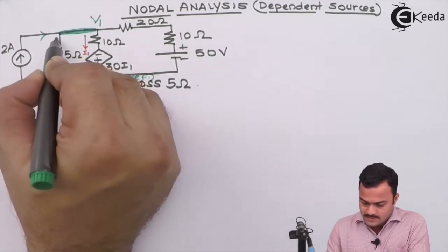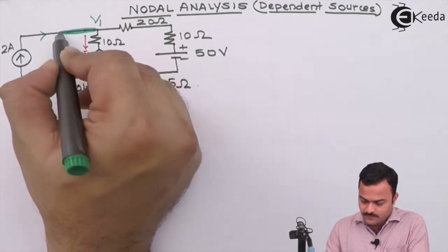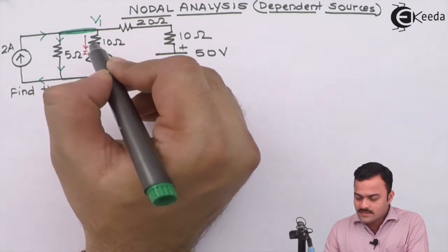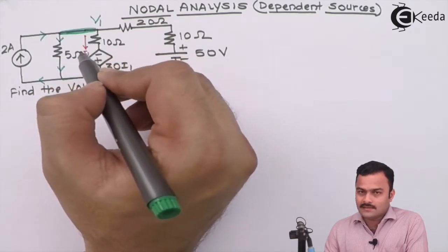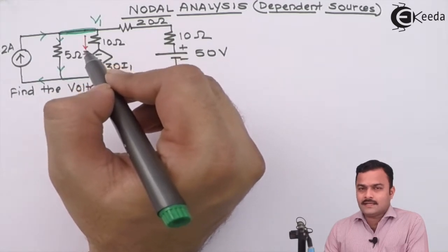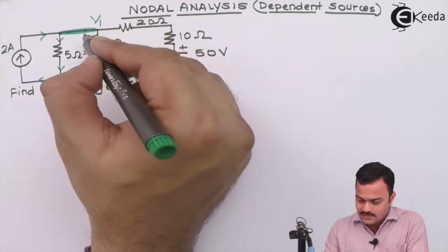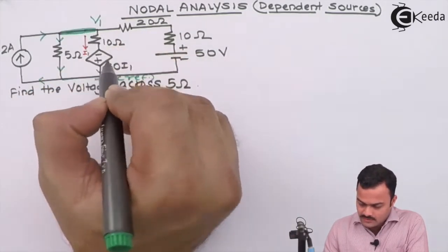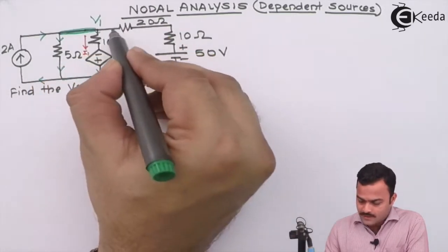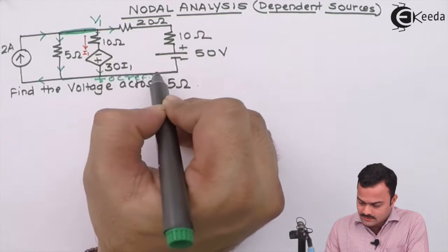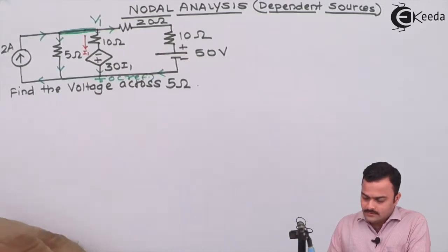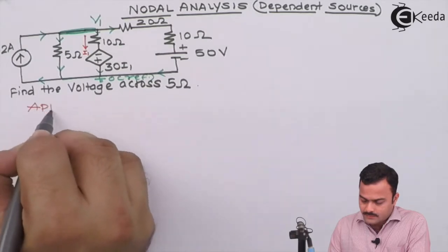This is a current source, so we will maintain the current direction as it is from reference to V1. One thing we will be keeping the same is whatever the current they have given, we will maintain the current direction as it is. Since they have given the downward direction, we will also maintain the current direction for our calculation as downward only. For this, let's consider the current direction like this. We will have only one node and one equation we have to write. Let's apply KCL to that particular node.